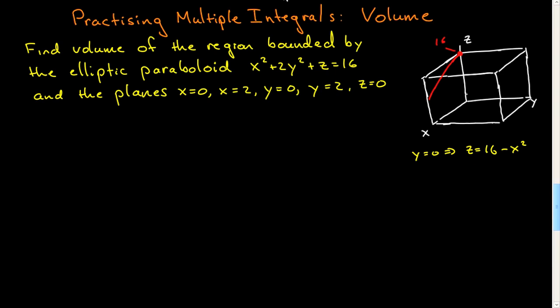And you can do the same thing when x equals zero. When x is equal to zero, I'm going to have z is equal to 16 minus 2y squared. And so I'll have a steeper, so it's going to come down more in this back plane. I'm looking at the back face there. So it's some region here. Not to scale, but there's some surface there. It's a little section of this elliptic paraboloid.